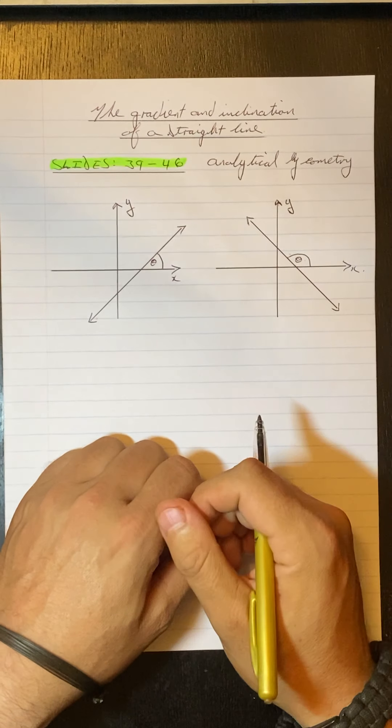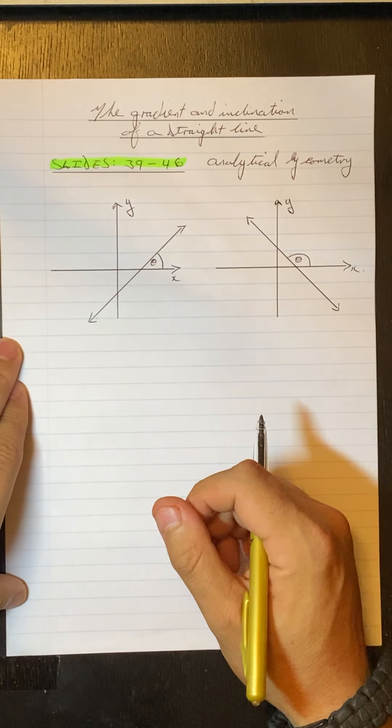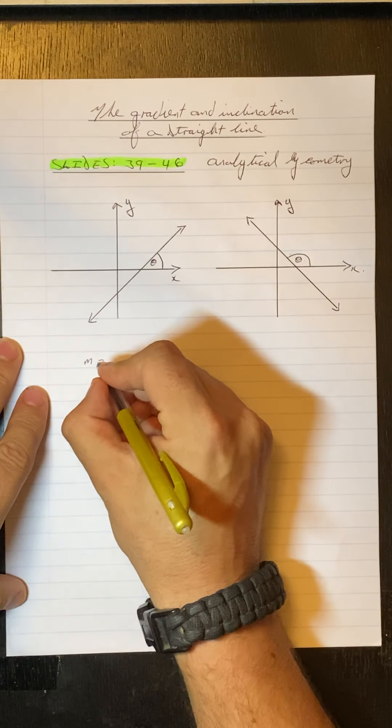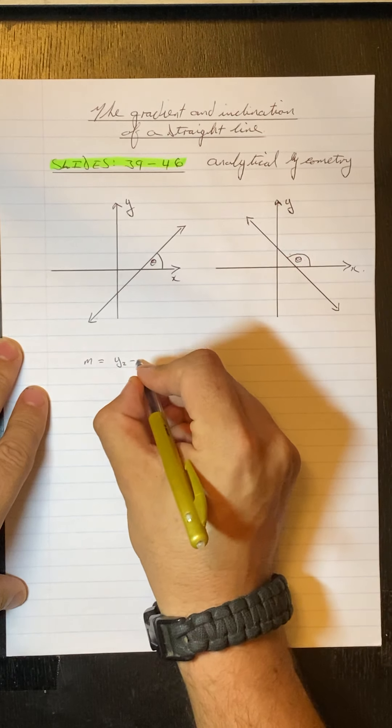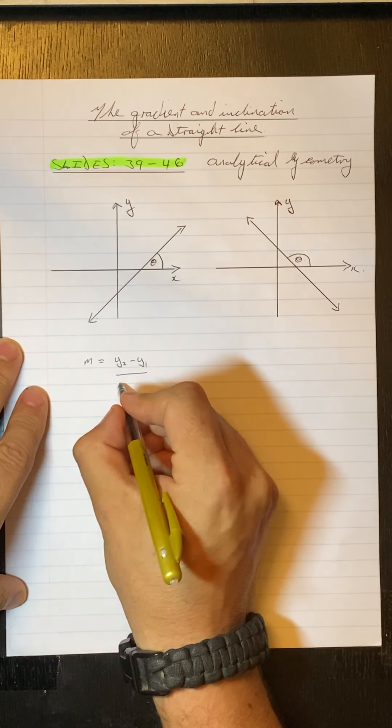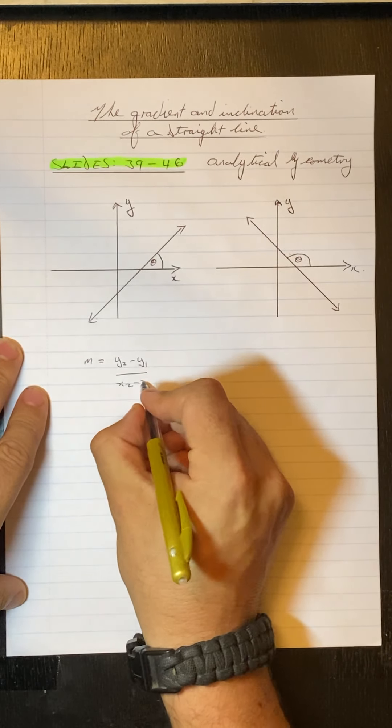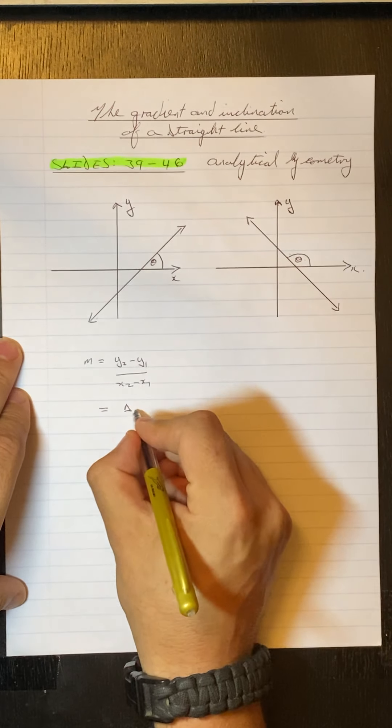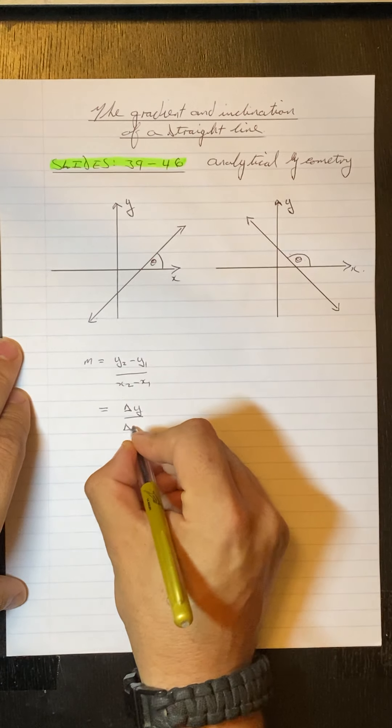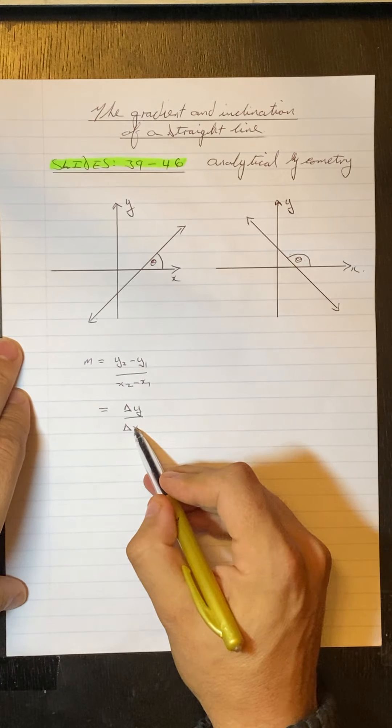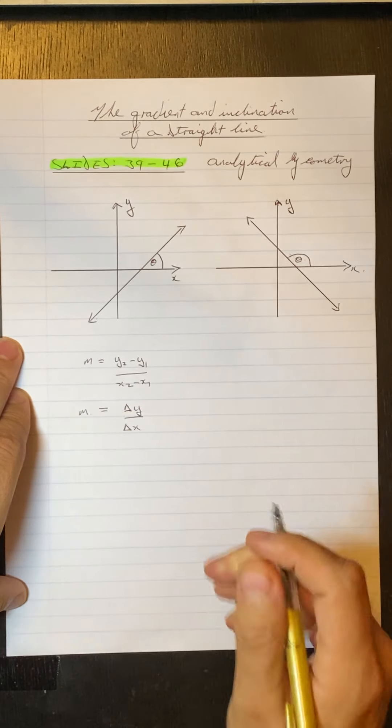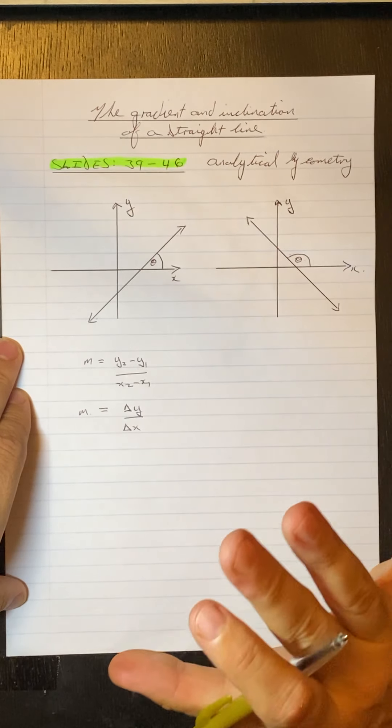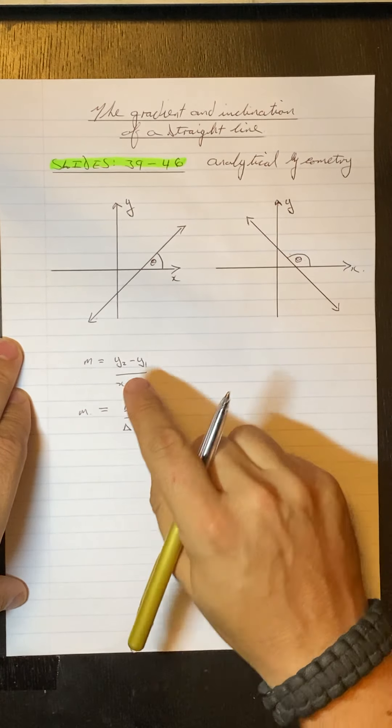Now how do we calculate this? Well, we know that the gradient of a line M is equal to y2 minus y1 over x2 minus x1. In other words, we can say delta y over delta x. In other words, the changing y over the changing x.